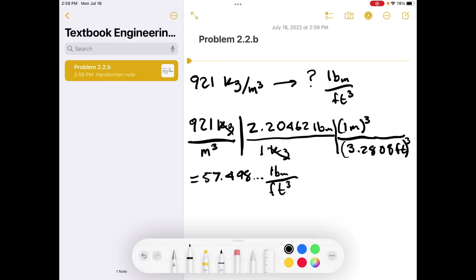We look at significant figures. There are not an ambiguous number of significant figures, three significant figures here. So we say 57.5 pounds mass per feet cubed. That is the answer to part b.